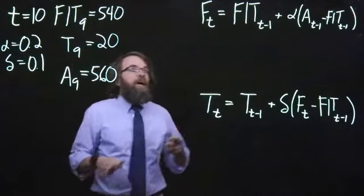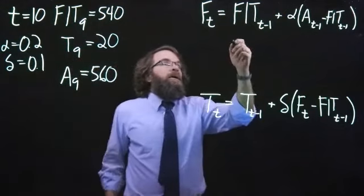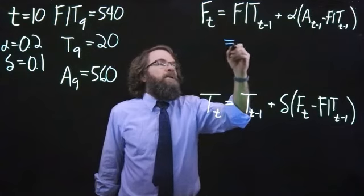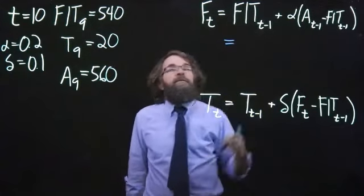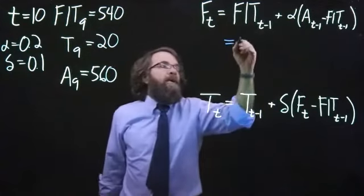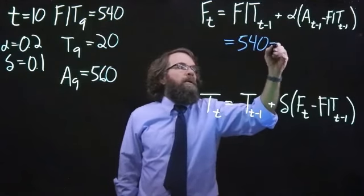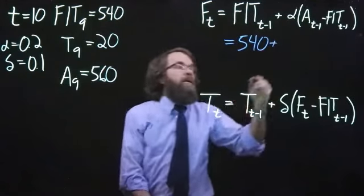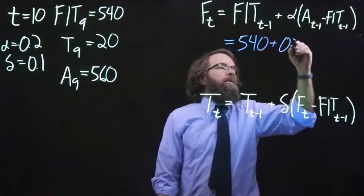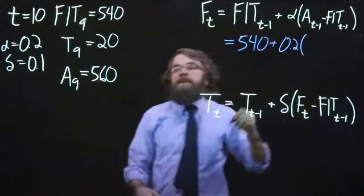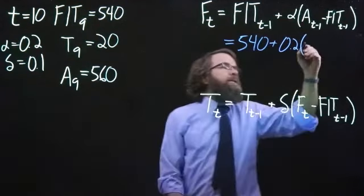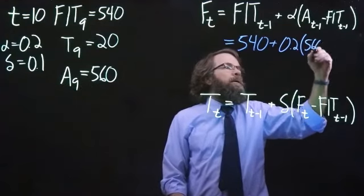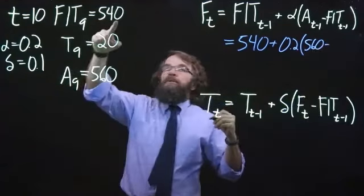So we'll start by updating our level. The forecast including the trend for the previous period was 540. Then we'll add on to that alpha of 0.2 times the actual, which was 560, minus the forecast including the trend.